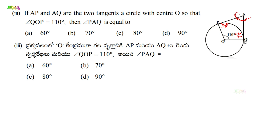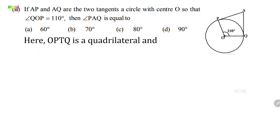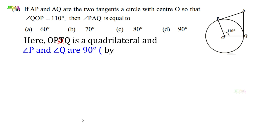O, P, A, Q is a quadrilateral. Angle P and angle Q are each 90° by Theorem 9.1. So we have four angles in this quadrilateral: angle Q = 90°, angle P = 90°, angle POQ = 110°, and angle PAQ is what we need to find.